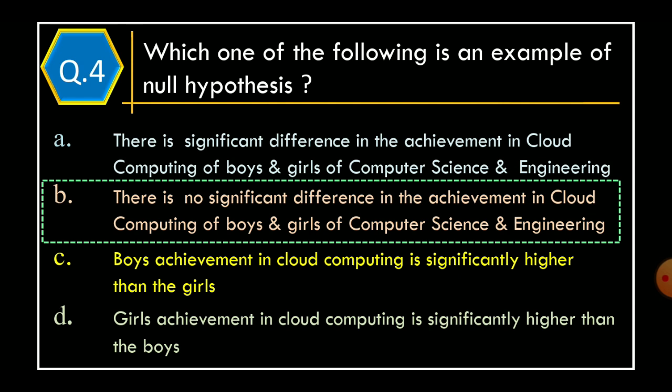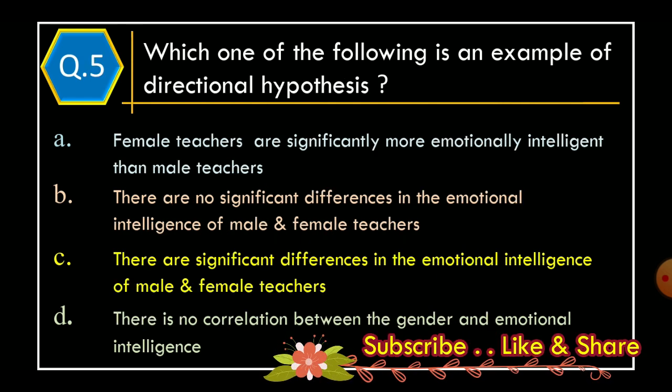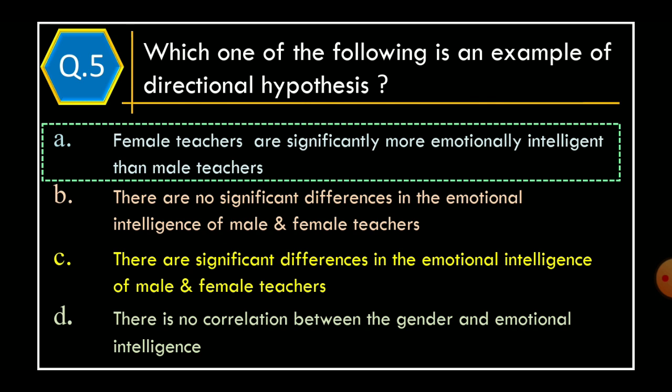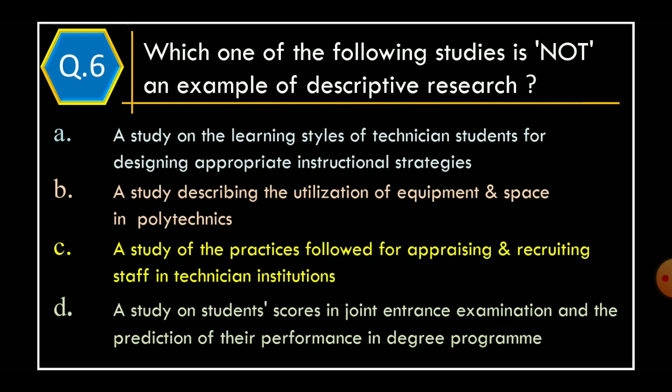Question 5: which one of the following is an example of a directional hypothesis? Option A: female teachers are significantly more emotionally intelligent than male teachers. Option B: there are no significant differences in the emotional intelligence of male and female teachers. Option C: there are significant differences in the emotional intelligence of male and female teachers. Option D: there is no correlation between gender and emotional intelligence. The correct option is Option A: female teachers are significantly more emotionally intelligent than male teachers.